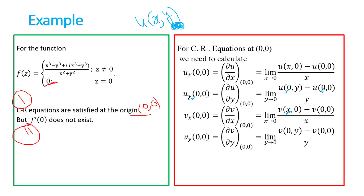u is a function of x and y. So when we are calculating ∂u/∂x, the increment is only in the x-axis, not in the y-axis. We are interested in the rate of change of u with respect to x only. This is given by the limit as x tends to 0 of u(x, 0) minus u(0, 0), divided by x.